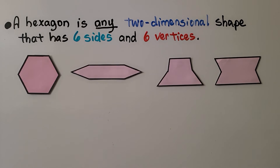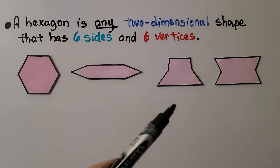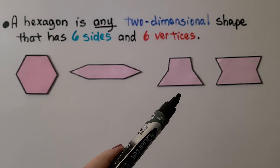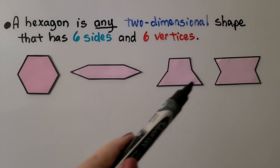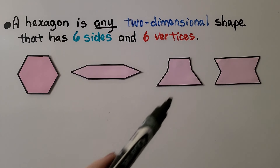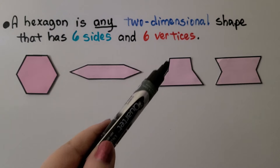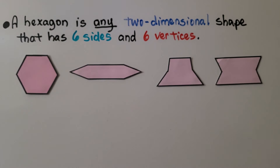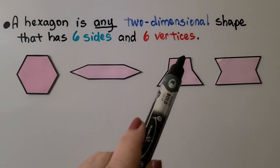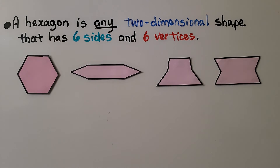If we try counting the sides for this shape and we don't go in the same direction, we could lose track — one, two, three, four... where am I? Is that five? Did I count this one already? Is that six? Did I count this one already? So it's a lot easier to start at one spot and go in the same direction around the shape.